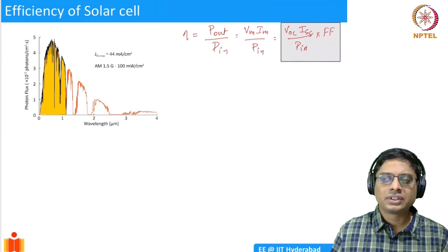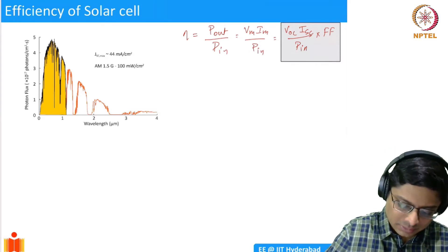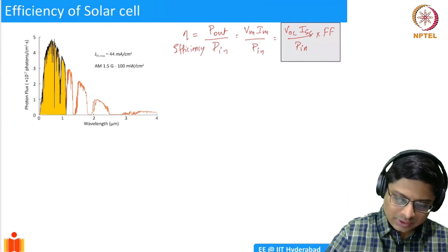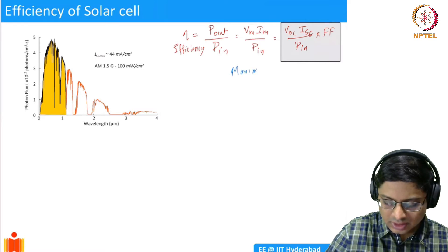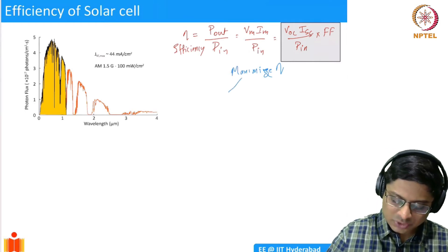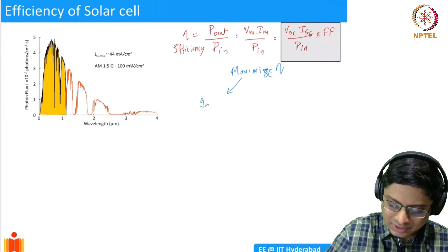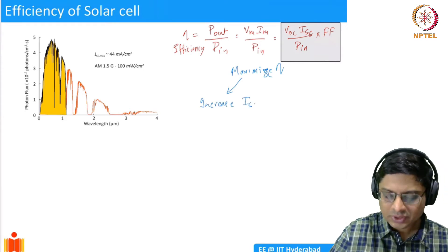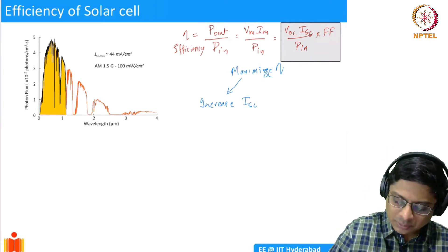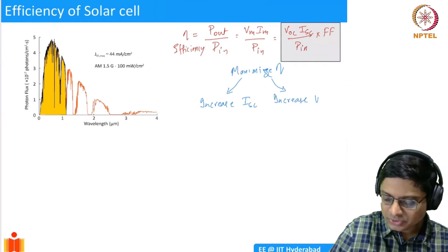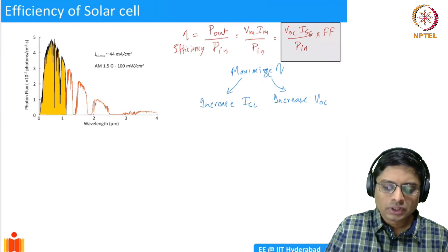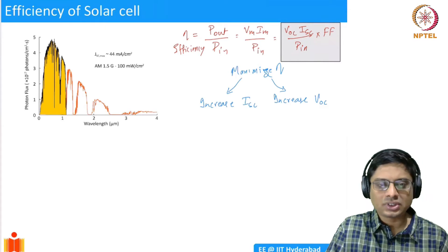If we want to maximize efficiency, we have two approaches available. The first is to increase Isc, the short circuit current — if we increase Isc we improve efficiency. The other option is to increase Voc, the open circuit voltage. Improving either one will improve the overall efficiency.